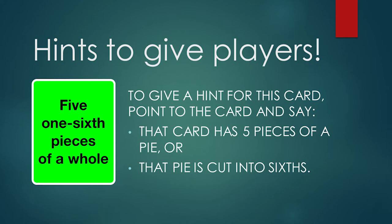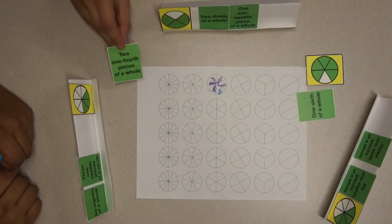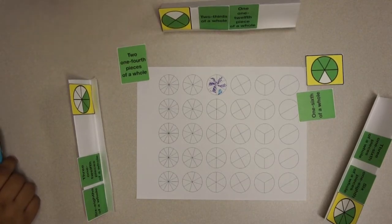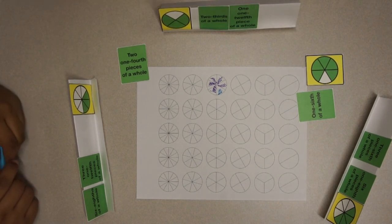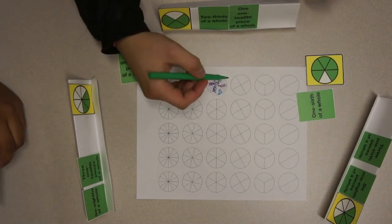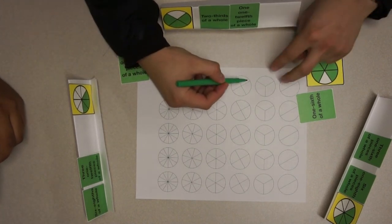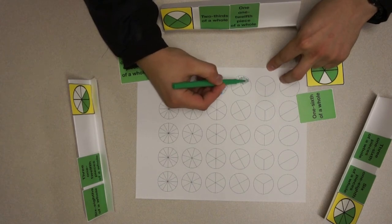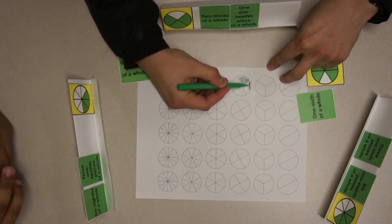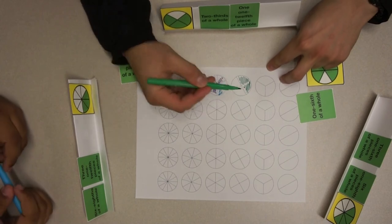Pause the video to study this example. Here, we can see a player playing a card and modeling it on the pie graph paper. Then the player gives a hint to another player by saying that card is cut into sixths. The player's turn ends. Play moves to the left. This round ends once you cannot make any more whole pies.